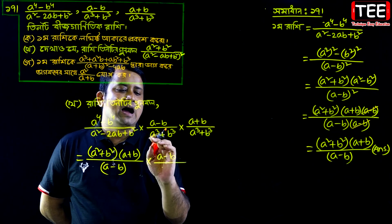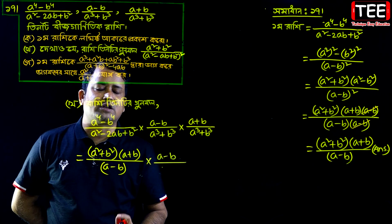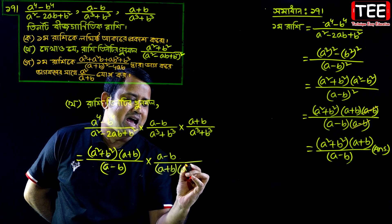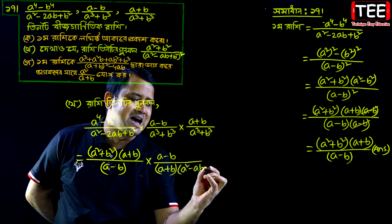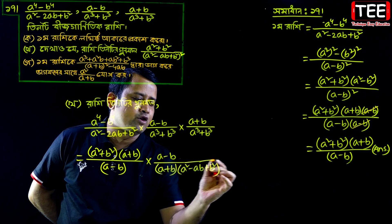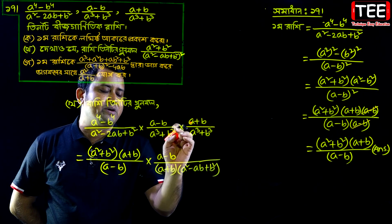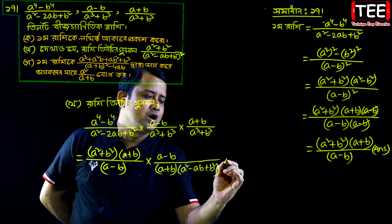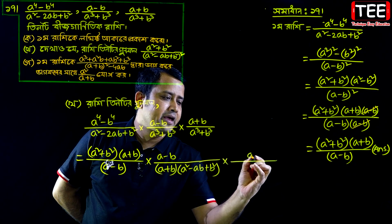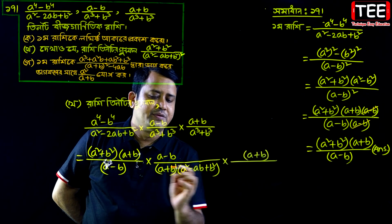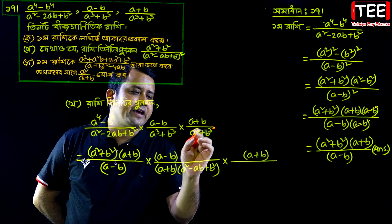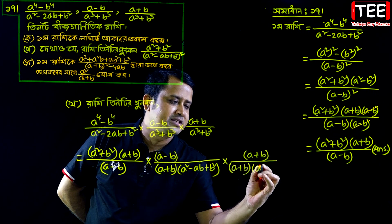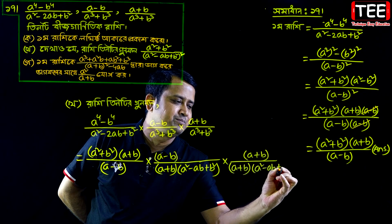Dhkhoj jayabba tamura a³ plus b³ sub 2, square in a — (a plus b)² — a plus b into a square minus ab plus b square. Gond a plus b dhkhoj jayabba a³ plus b³ sub 2, square in a³ plus b³ sub 2, square b dhkhoj — a b bunta sidra plus b — so a plus b into a square minus ab plus b square.